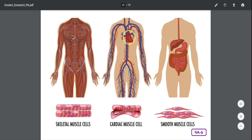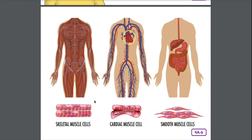Skeletal muscles are voluntary. Cardiac and smooth muscles are involuntary — the prefix 'in' means not, so involuntary means not voluntary. What other systems are interconnected with the muscular system? The skeletal system — to get any type of movement with a muscle, you have to have a skeleton attached to it with tendons. But the nervous system is also interconnected with the muscular system.